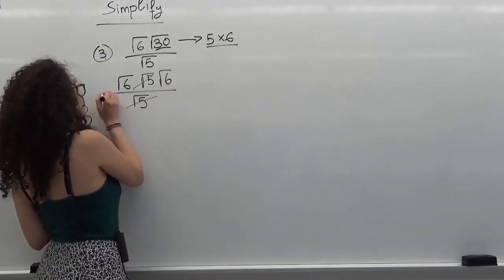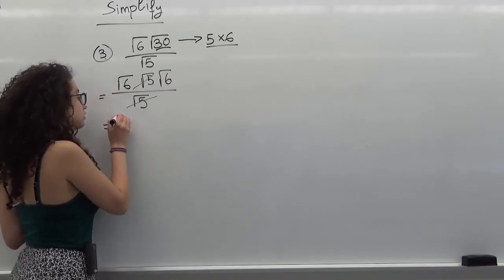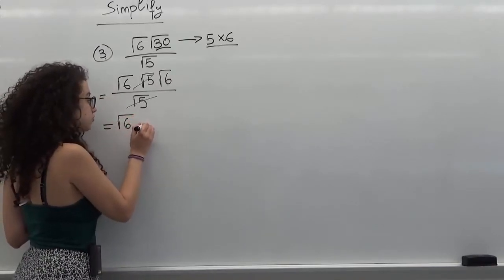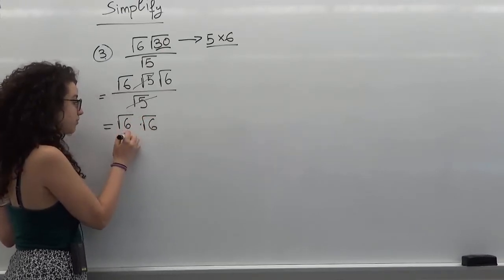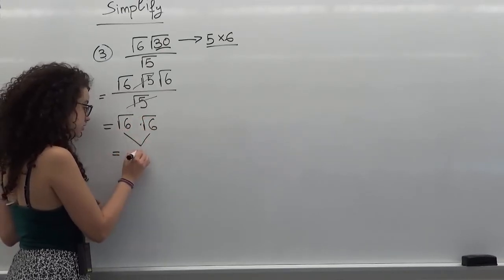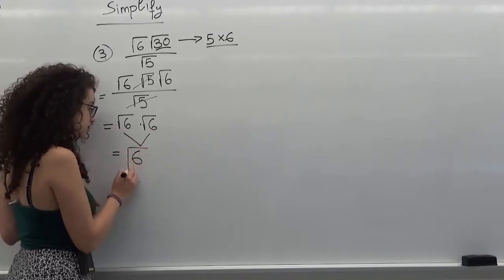So I will be left with radical of 6 times radical of 6. We know that two radicals of the same number will give me a perfect square. So the answer is just simply going to be 6.